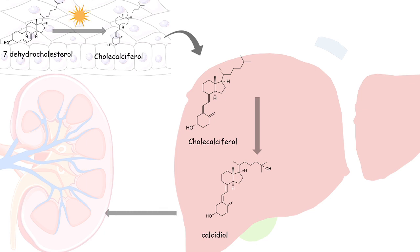Then calcidiol or 25-hydroxyvitamin D3 moves to the kidneys. In the kidneys, calcidiol gets converted into calcitriol or 1,2,5-dihydroxyvitamin D3. This is the active format of vitamin D3 or calcitriol. So this is how vitamin D3 is synthesized in our body.